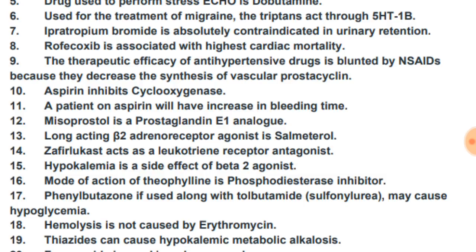Aspirin inhibits cyclooxygenase enzyme; a patient on aspirin will have an increase in bleeding time. Misoprostol is a prostaglandin E analog. The long-acting beta-2 adrenoreceptor agonist is salmeterol. Zafirlukast acts as a leukotriene receptor antagonist. Hypokalemia is a side effect of beta-2 agonists. The mode of action of theophylline is phosphodiesterase inhibition.